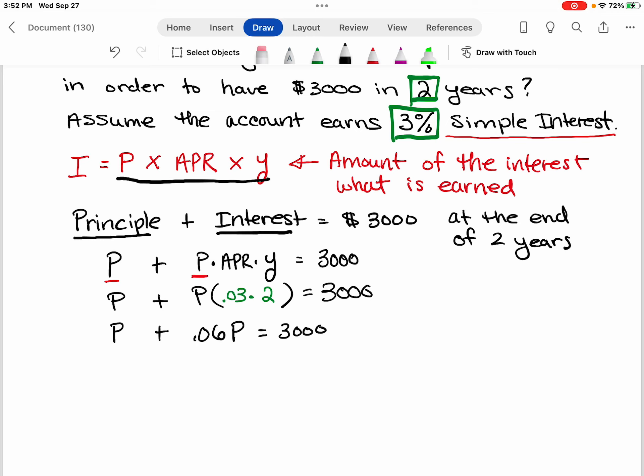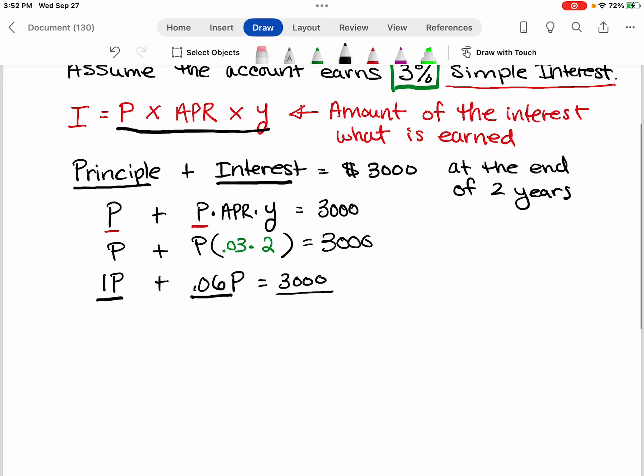Now, even though we don't write it in here, we know that this is 1P. So I have 1P plus 0.06P to give me a total of 3000. So I can combine these because they're both Ps. So I have 1.06P is equal to 3000.